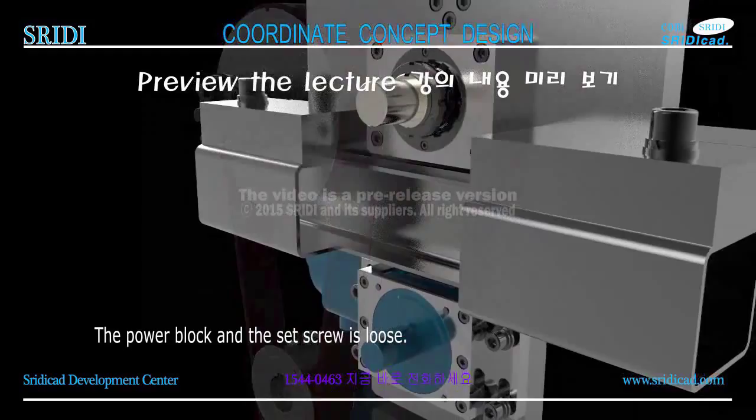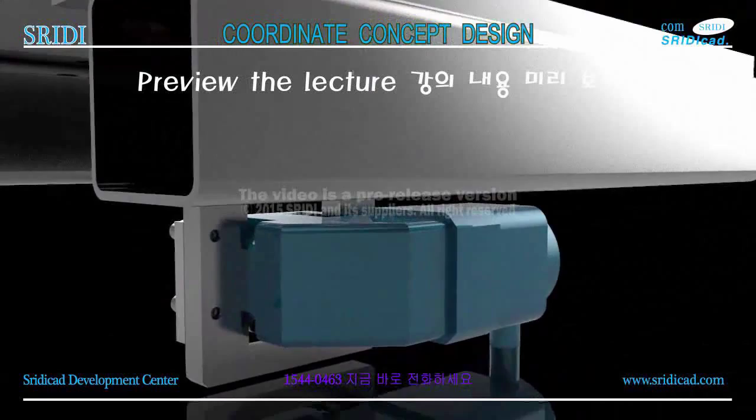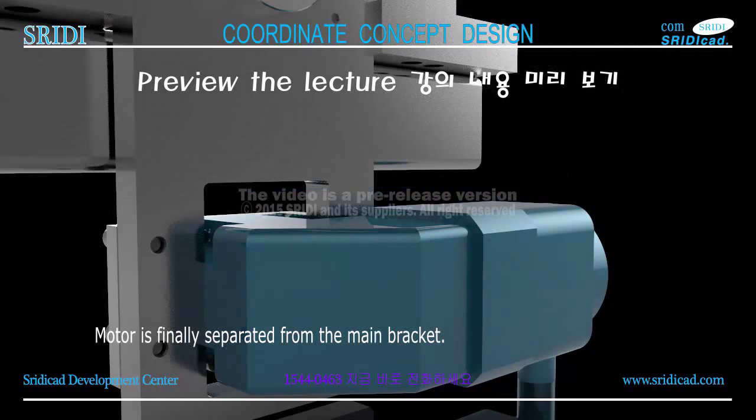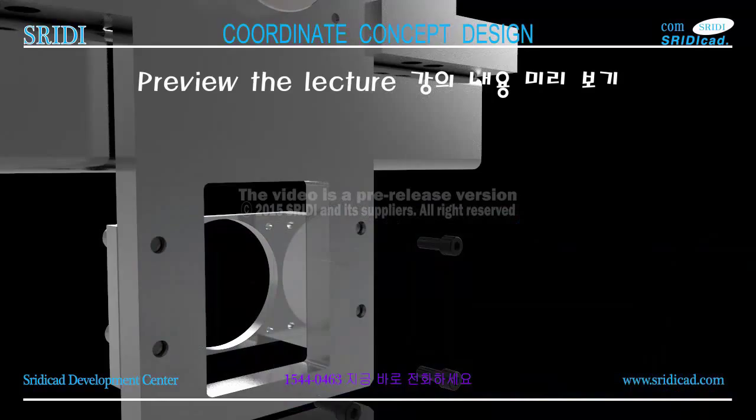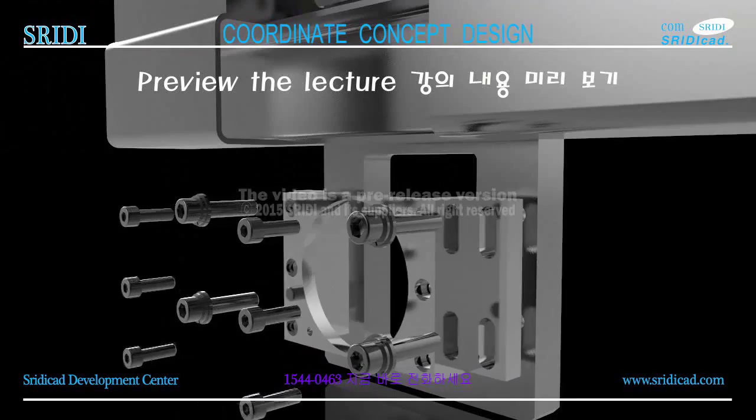The motor is finally separated from the main bracket. The M8x25 bolt is removed. You would see the power transmission gear and roller assembly — let only the top idler remain.